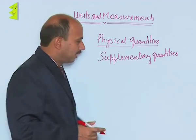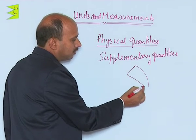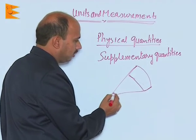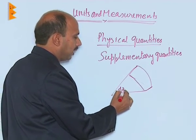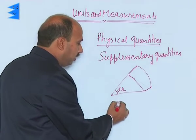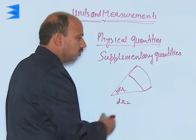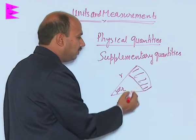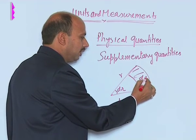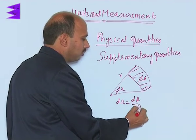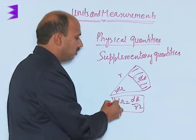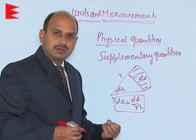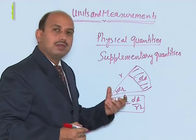For solid angle, suppose you have taken any surface subtending an angle d omega. So d omega is equal to the area dA upon r squared. When the angle is subtended by the surface of a sphere at a point, that is known as solid angle.